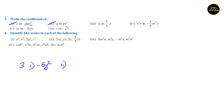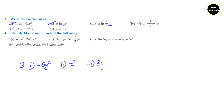Second question: q in qh square. Exclude q and what is remaining? h square. So h square is the coefficient. Third question: a in 2 by 3a. Excluding a, the remaining is 2 by 3. The answer is 2 by 3.